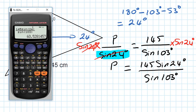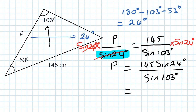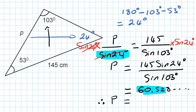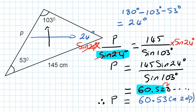I put this in the calculator and get 60.528 and so on. Because the question didn't specify, I round to an appropriate number of decimal places — two decimal places. Before writing 60.52, I look at the next digit: it's 8, which is greater than 5, so I add 1 to the 2. Therefore P equals 60.53 centimeters, correct to 2 decimal places.